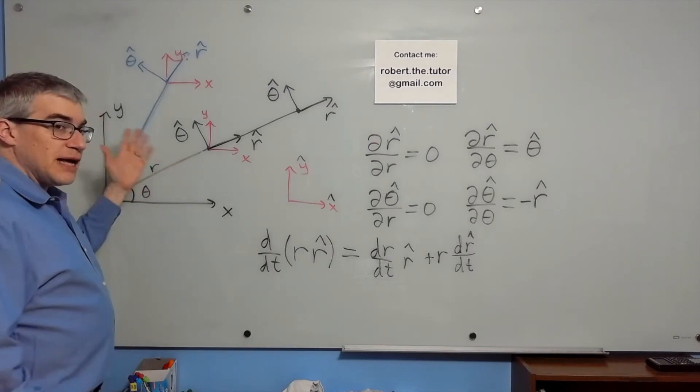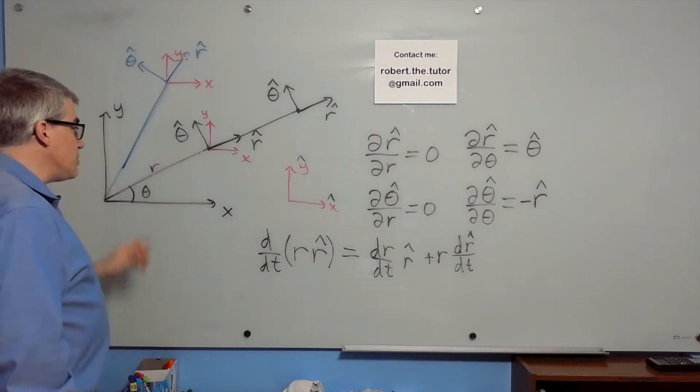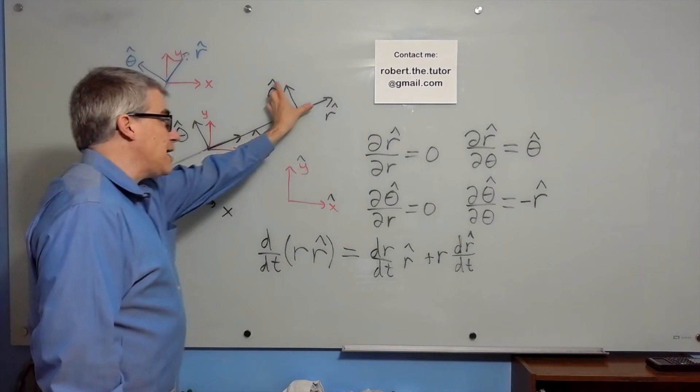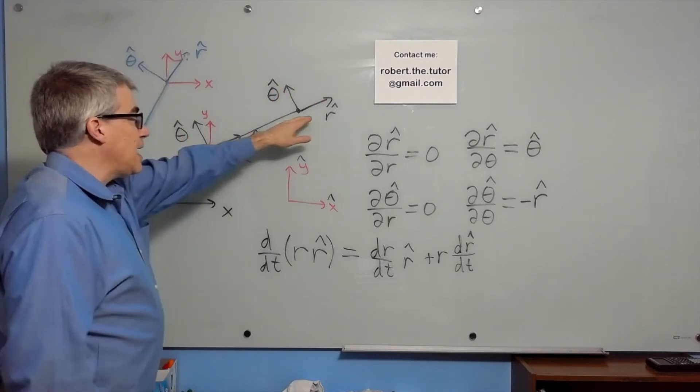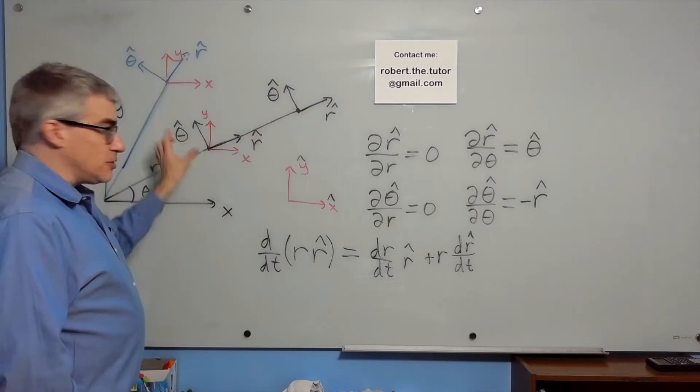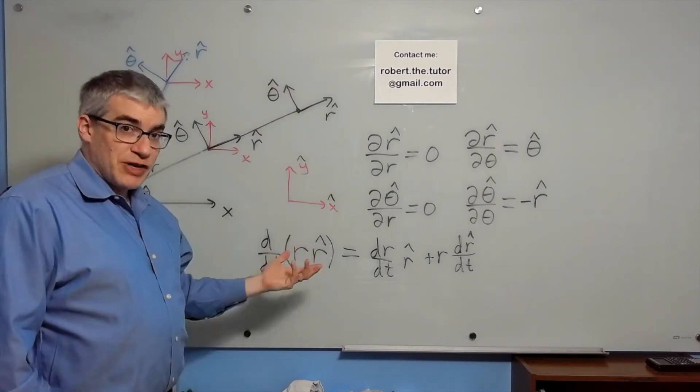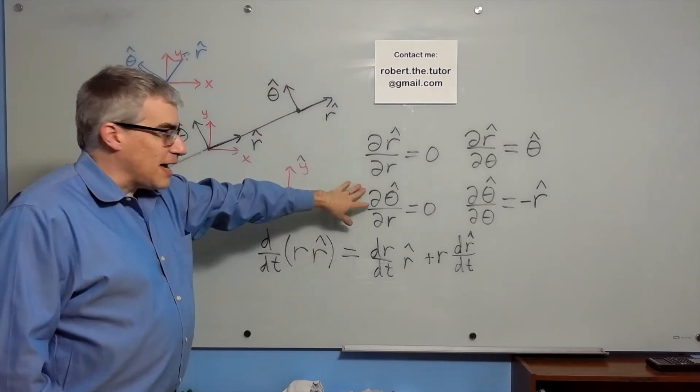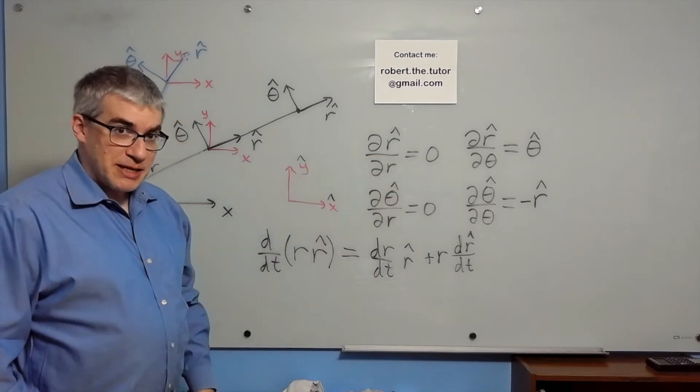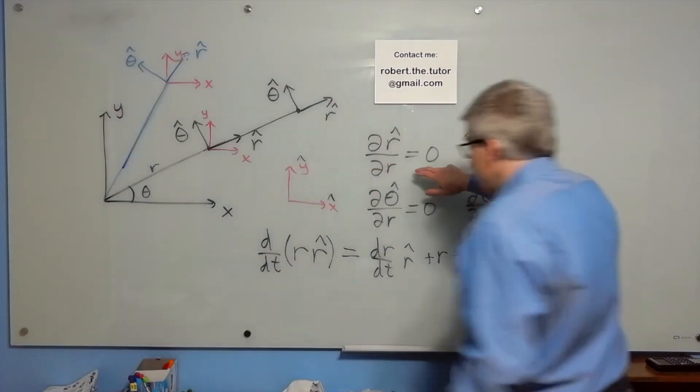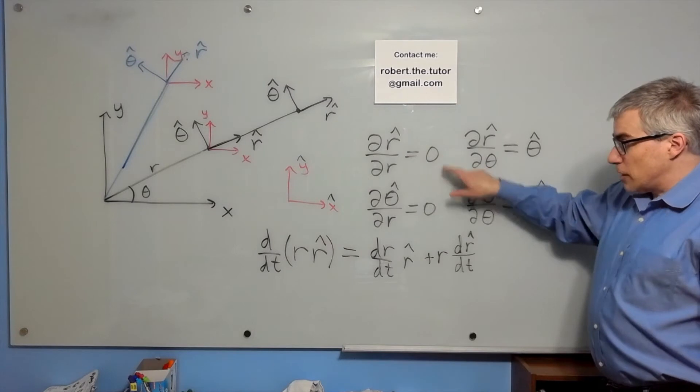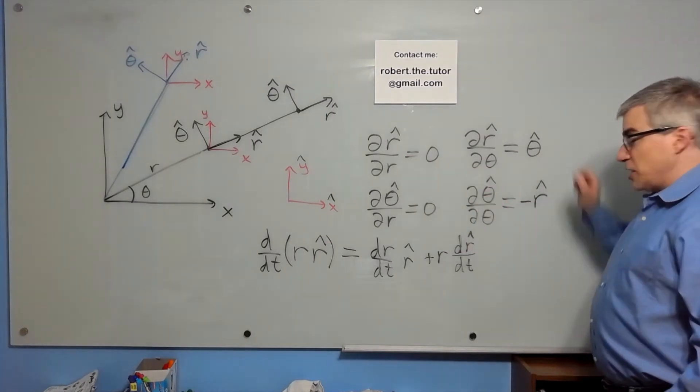They depend on theta. They don't depend on r, though, because if you simply slide further out from the origin, r-hat and theta-hat don't change. They just move, but they didn't rotate. They don't change when you change r, but they do change when you change theta.